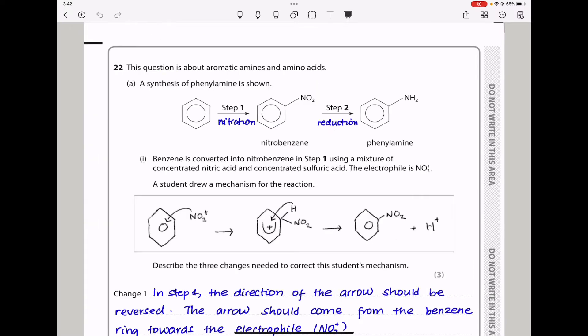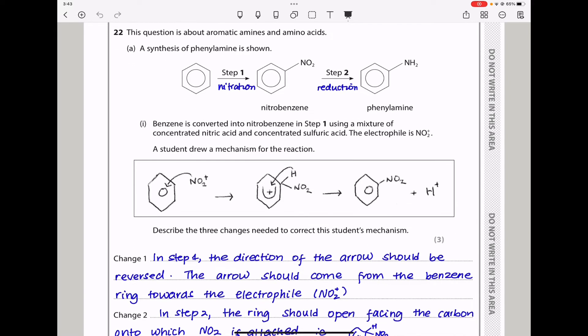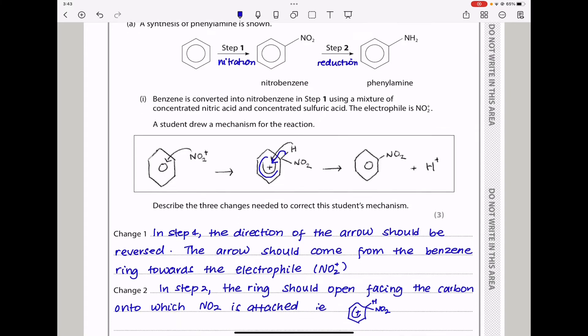Question 22. This question is about aromatic amines and amino acids. A synthesis of phenylamine is shown: nitration from benzene to nitrobenzene using concentrated nitric acid and concentrated sulfuric acid at 50-60°C, then reduction using tin and concentrated HCl. Question says benzene is converted into nitrobenzene in step one, the electrophile is NO₂⁺. A student drew a mechanism, but we can see there are errors: this arrow should point the other way, the open ring should face differently, and this should come from the bond not the hydrogen atom. There are three mistakes.